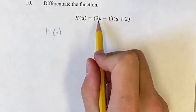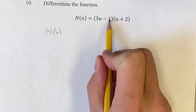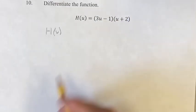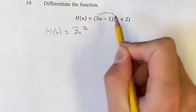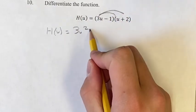So when we're distributing this, we want to multiply 3u by both of these and negative 1 by both of these. So if we do that, we have 3u times u, which is 3u squared, plus 3u times 2 is 6u.